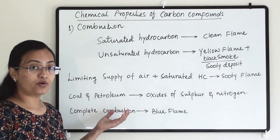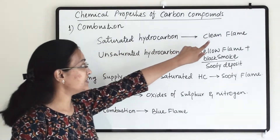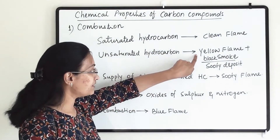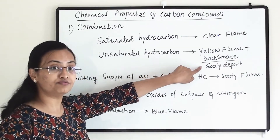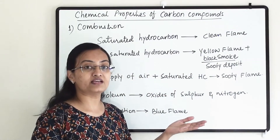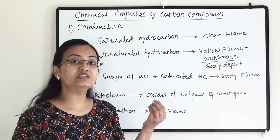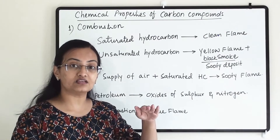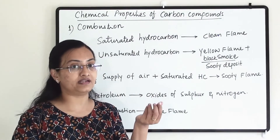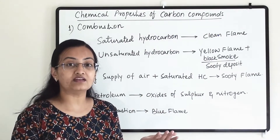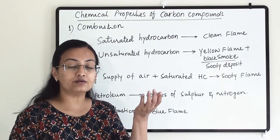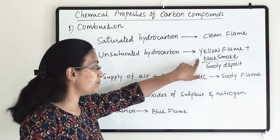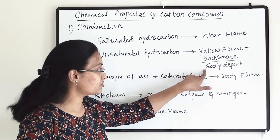Important points of combustion reaction: when a saturated hydrocarbon burns it gives a clean flame. But when an unsaturated hydrocarbon — alkene or alkyne — burns, it gives a yellow flame with a lot of black smoke, also referred to as sooty deposit or sooty flame. For example, when a candle burns and you hold a vessel over the flame, you get a carbon deposit — that is the sooty flame.